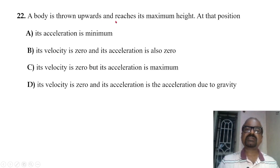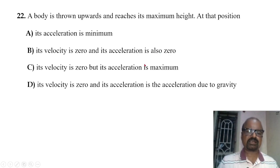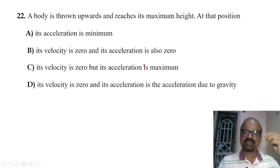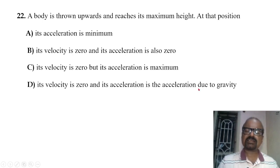A body is thrown upwards and reaches its maximum height. At that position, velocity is zero. But acceleration is not zero — it is not the same as velocity. Acceleration remains constant throughout and equals the acceleration due to gravity. That is the correct answer.